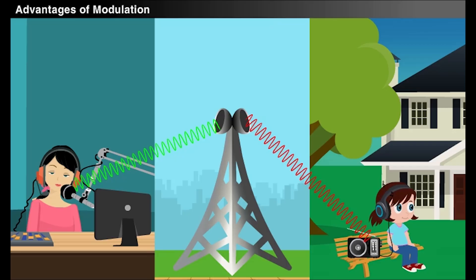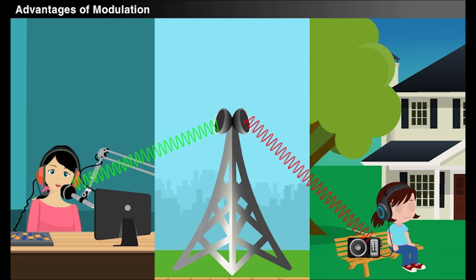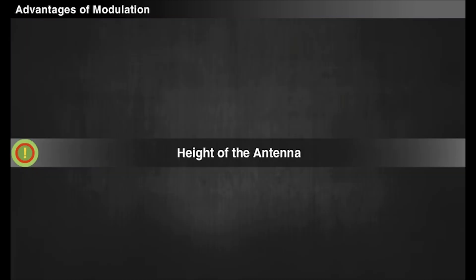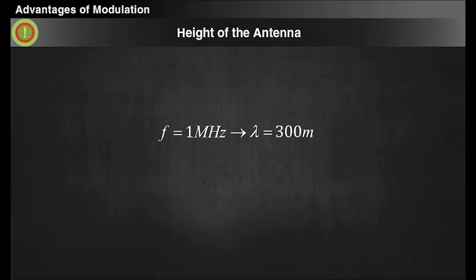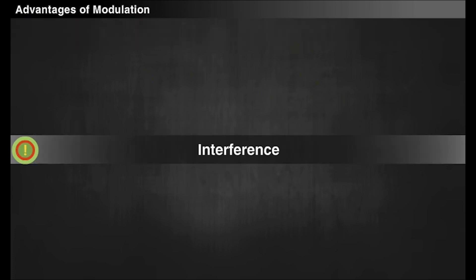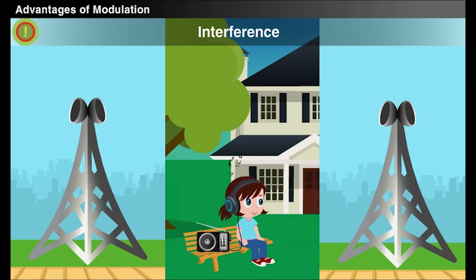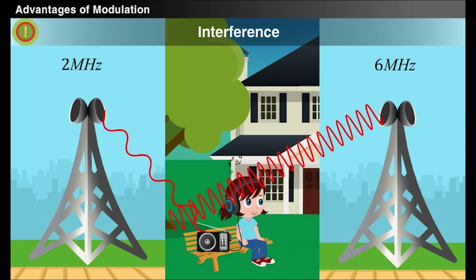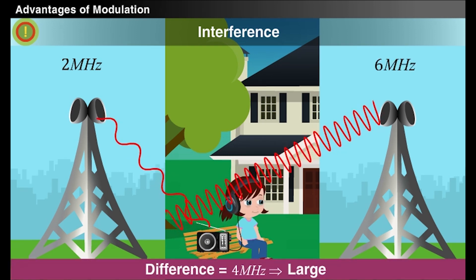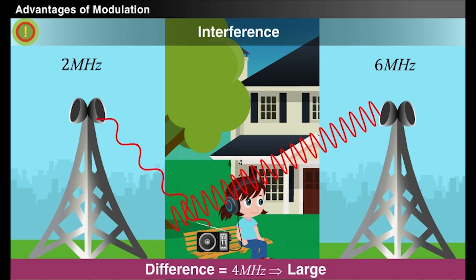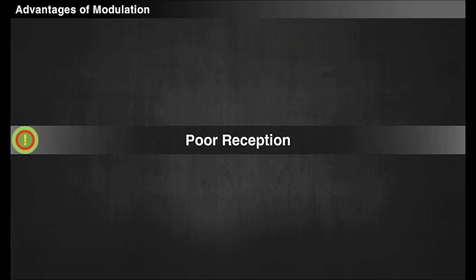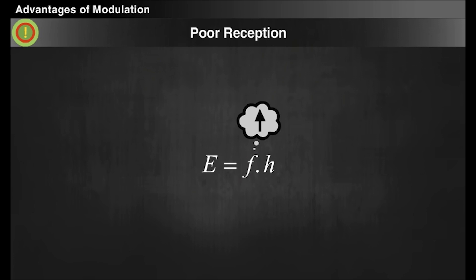Let us see how the problems in the transmission of the low frequency signals are overcome by modulation. To overcome the problem of antenna height, if a high frequency signal of 1 MHz is used, the height of the antenna will be around 75 meters, which can be achieved practically. To overcome interference, if the stations transmit high frequency signals like 2 MHz and 6 MHz, then their difference will be high, that is, 4 MHz, and thus the waves will not mix with each other. To overcome the problem of poor reception, if the frequency of the signal is high, automatically the energy of the signal will also be high, and hence we can obtain a good quality signal at the receiving end.